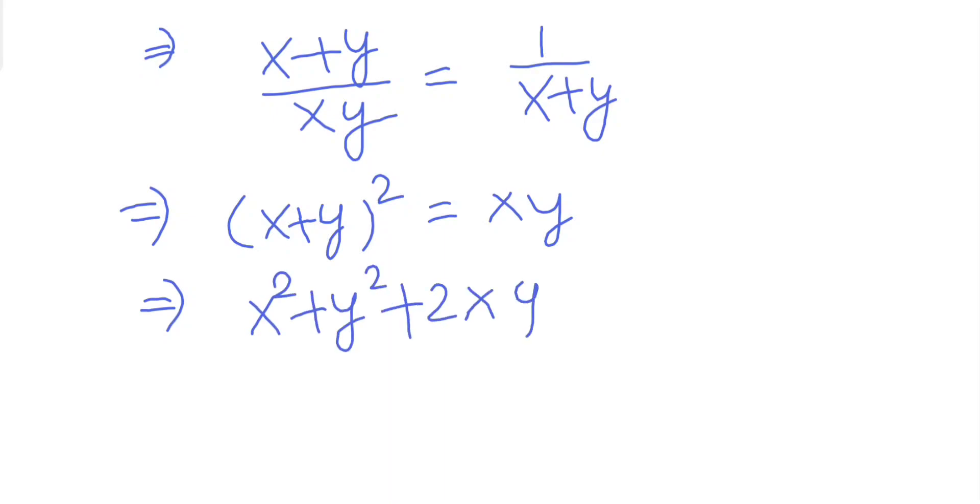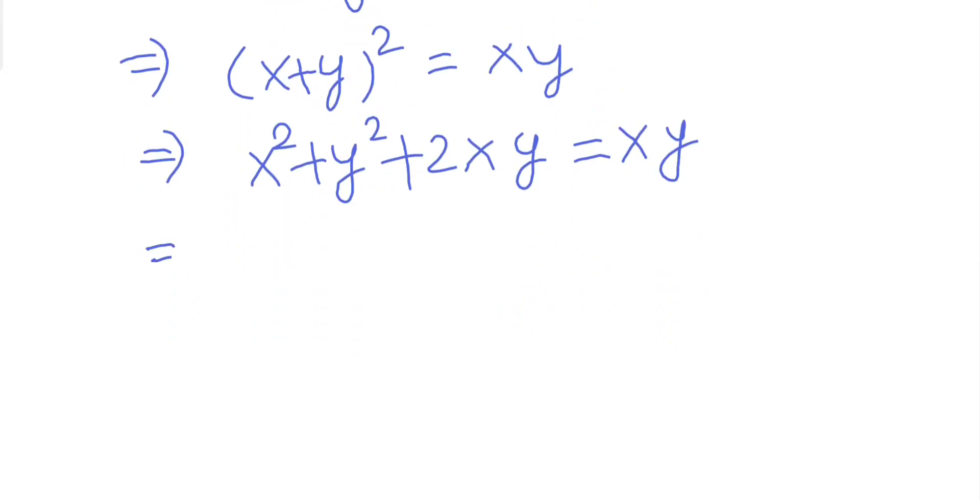Cancelling xy from both sides, we have x² + y² + xy = 0, or x² + y² equals minus xy.